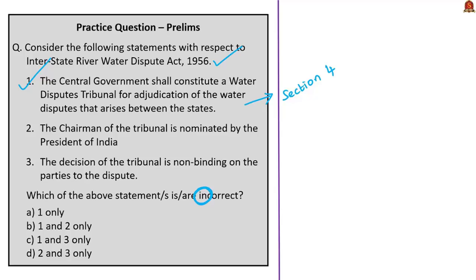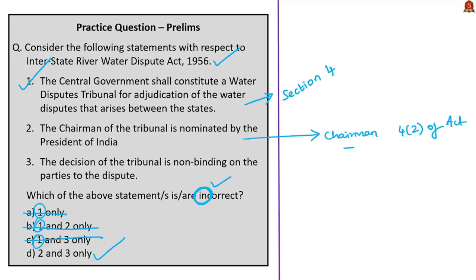Since statement one is correct, and the question asks for incorrect statements, we can eliminate options A, B, and C. The correct answer is option D: two and three only. The second statement says the chairman of the tribunal is nominated by the President of India — but according to Section 4(2) of the Act, the tribunal's chairman and two other members are nominated by the Chief Justice of India, not the President.